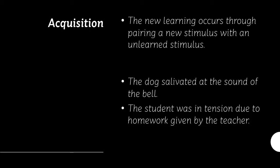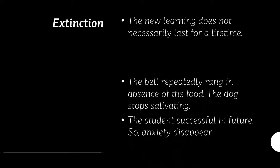The next is acquisition. New learning occurs through pairing a new stimulus with an unlearned stimulus. For example, the dog salivated at the sound of the bell; also, a student was in tension due to homework given by a particular teacher. Extinction is the opposite of acquisition — new learning doesn't necessarily last for a lifetime. For example, the dog stops salivating after repeatedly ringing the bell in the absence of food.